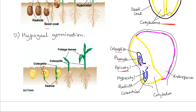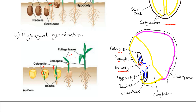By growing towards light, the coleoptile shows positive phototropism, while by growing away from gravity it shows negative geotropism. The coleoptile and plumule grow out through the pericarp — the maize grain wall consists of the pericarp and the cotyledon. Once out of the ground and exposed to light, the coleoptile ruptures and the leaves (the plumule) grow out to form the first foliage leaves, which carry out photosynthesis.